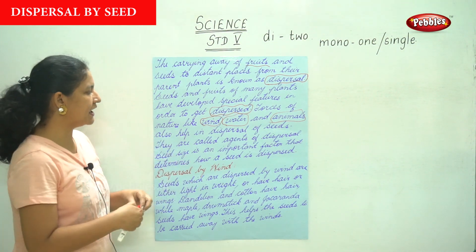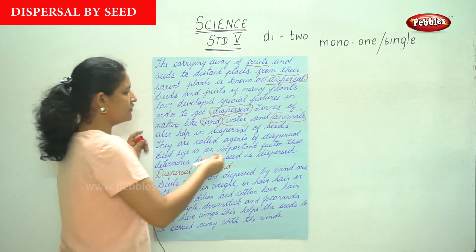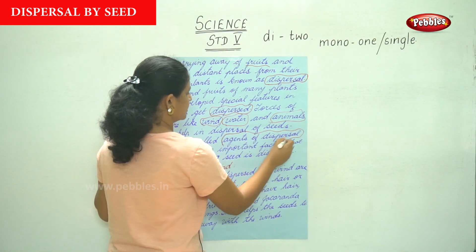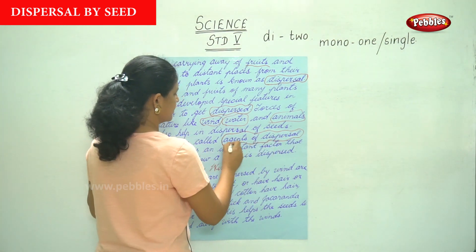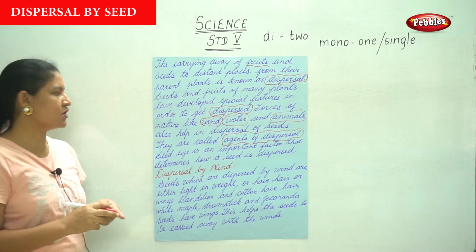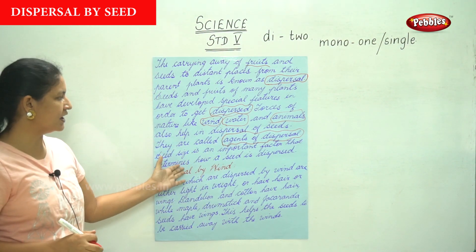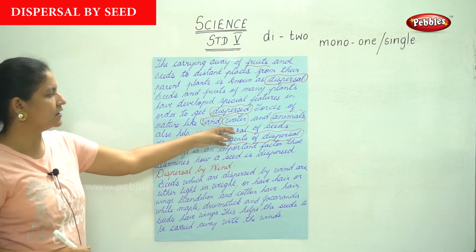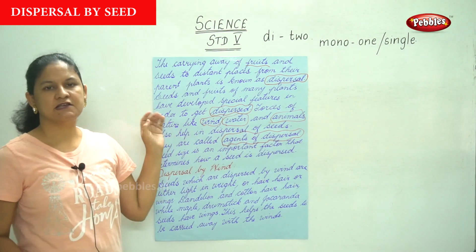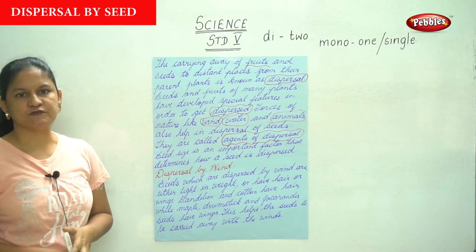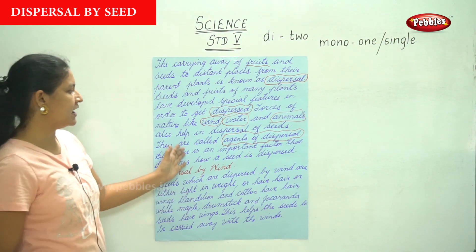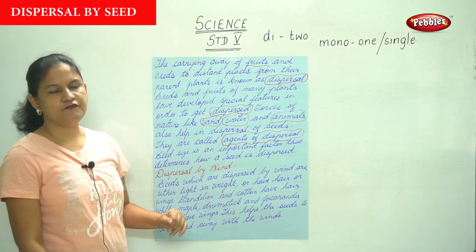These forces of nature are called agents of dispersal — wind, water and animals help in the dispersal of seeds and are known as the agents of dispersal.